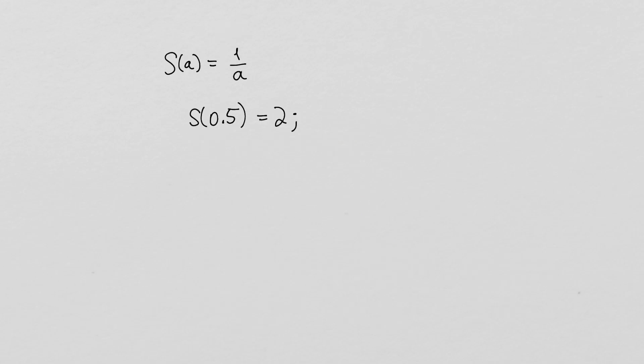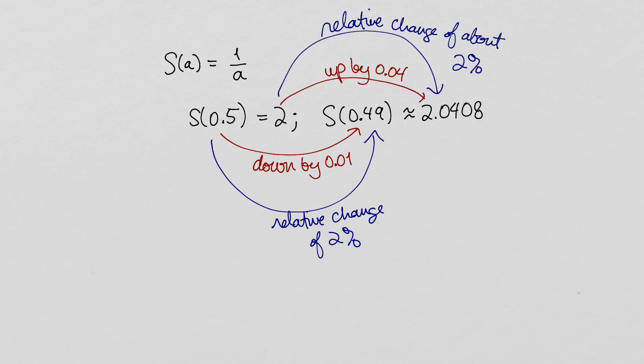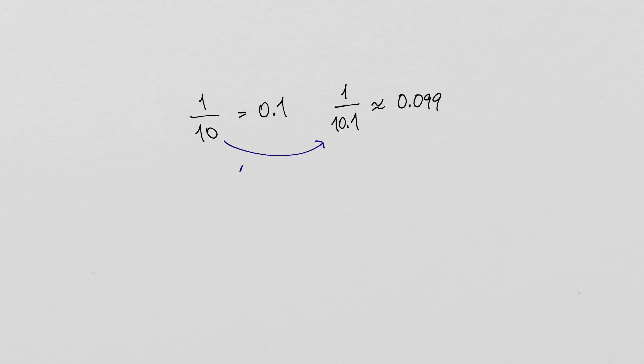For example, the reciprocal function magnifies errors when given an input between 0 and 1, but the relative error is pretty much the same before and after taking the reciprocal. This is true of other input values as well. In fact, the condition number of the reciprocal function is 1 everywhere.